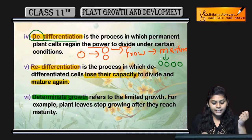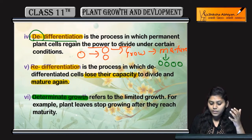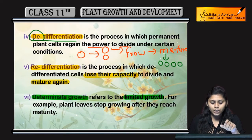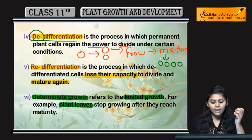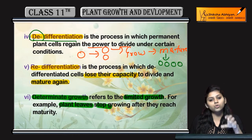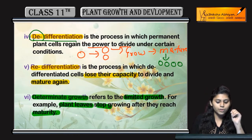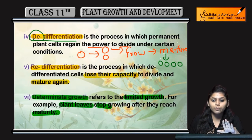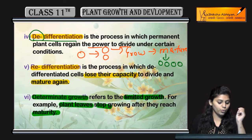Next is determinate growth. Kisi bhi organism ki limited growth ho, usse determinate growth bolte hai. For example, plants ki jo leaf hai, woh grow karna stop kar deti hai after they reach maturity. Leaf mature hogi, growth stop ho jayegi — woh leaf ki determinate growth hai.